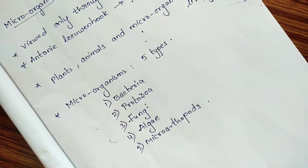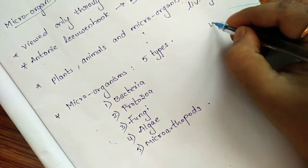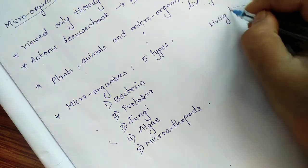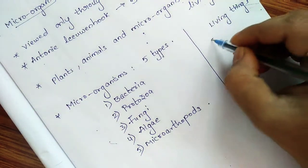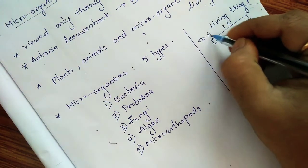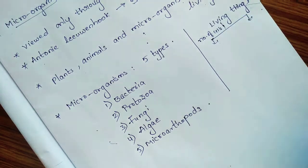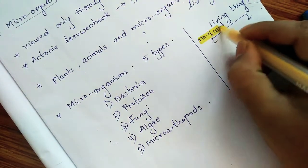In the last class, we learned that we can classify living things into two types based on the number of cells. We can divide living things into two categories.